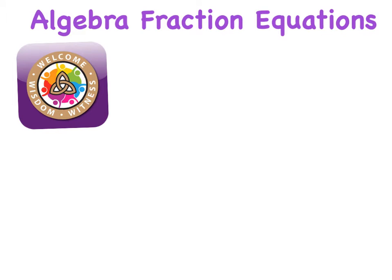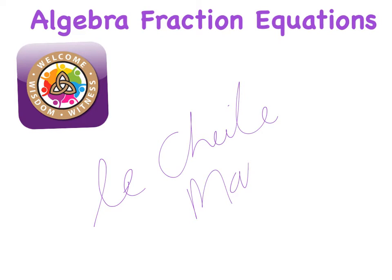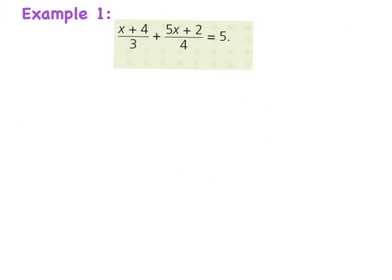Example one: we have (x + 4) divided by 3, plus (5x + 2) divided by 4, equals 5. The whole new part of this is the equals sum here, but we're going to approach this the same way we have previously and focus on the fraction part.